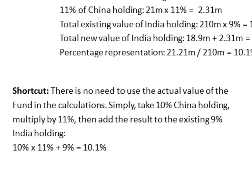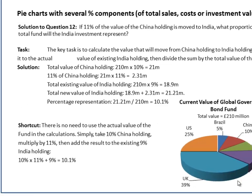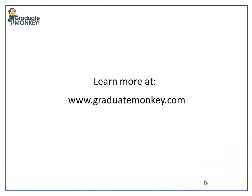The correct answer will be 10% times 11% plus 9%, which is 10.1%. Easy as pie. Visit www.graduatemonkey.com to learn more.